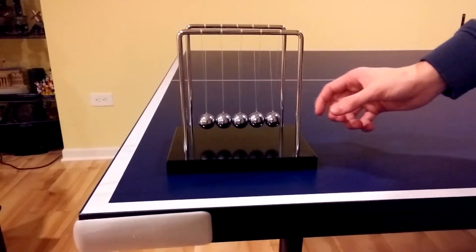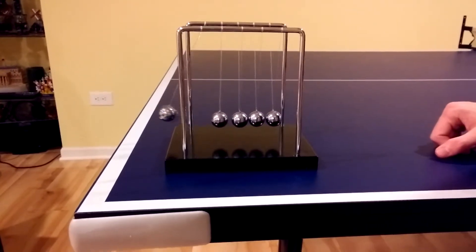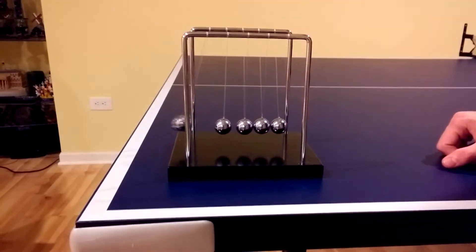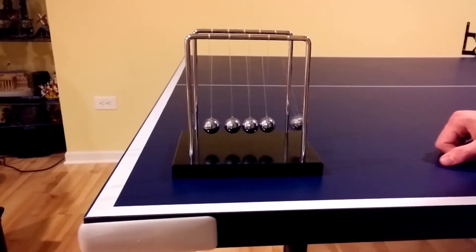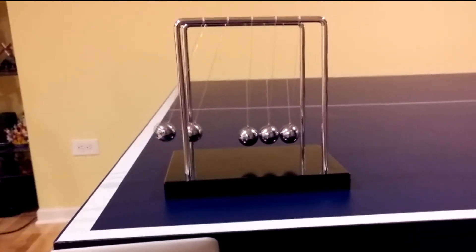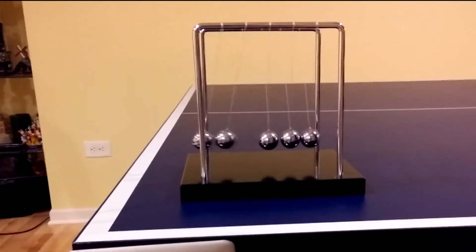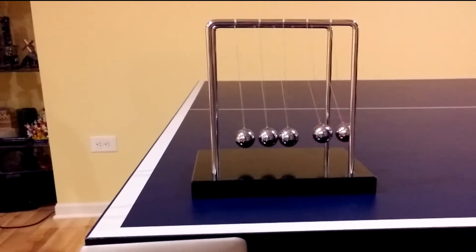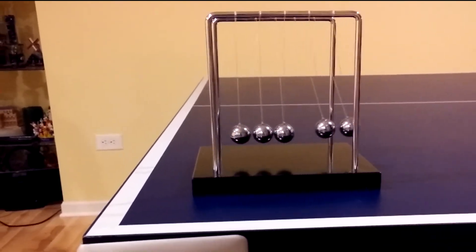Newton's cradle is a perfect example of the action-reaction pairs of the third law. When the ball in one end is pulled back and then let go, it swings into the other balls. The ball on the opposite end then swings up with the equal force to that of the first ball. The force of the first ball causes an equal and opposite reaction in the ball at the other end.